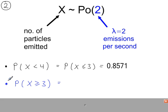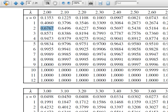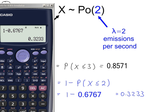To work out the probability that X is at least 3, we need to calculate 1 minus P(X ≤ 2). From the tables, P(X ≤ 2) is 0.6767, which gives P(X ≥ 3) = 0.3233.